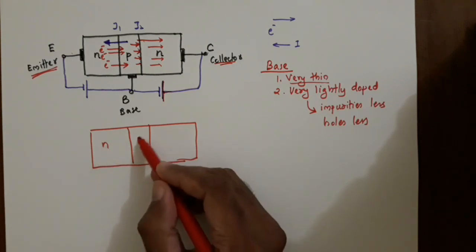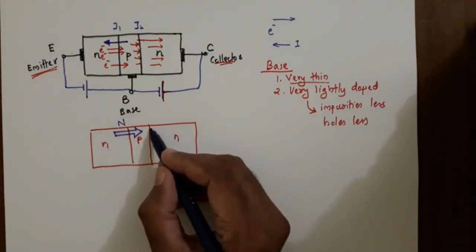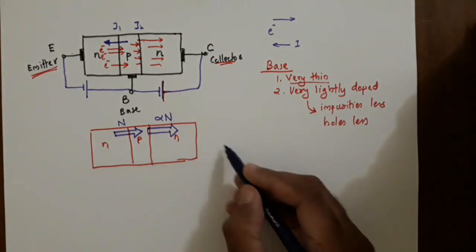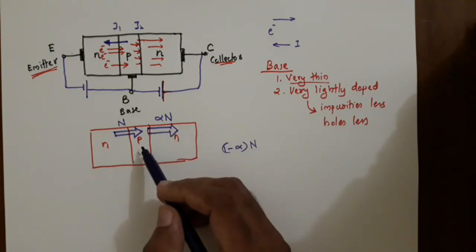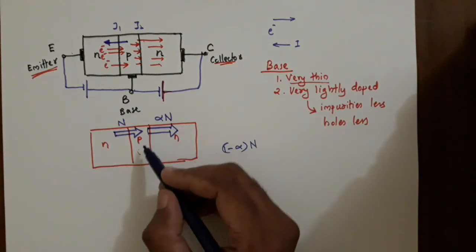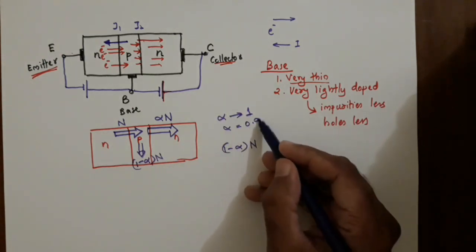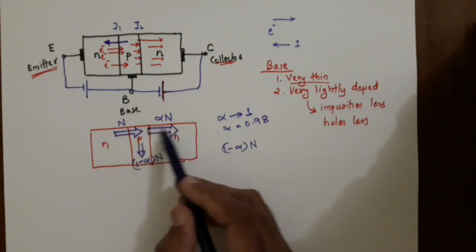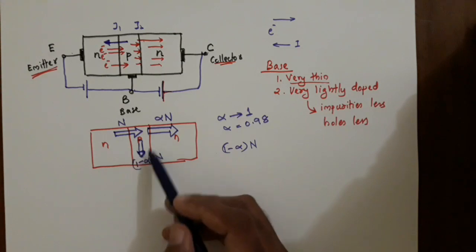Suppose N electrons have crossed junction J1. Then the majority of electrons — α·N — will reach the collector junction. A small portion, (1−α)·N, will recombine with holes in the base region. Alpha is a number close to unity, typically 0.98 or 0.99, meaning most electrons successfully pass to the collector and only a small fraction is lost to recombination in the base.